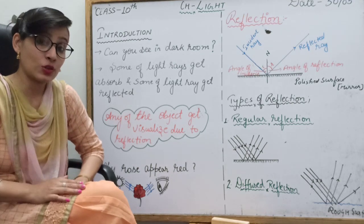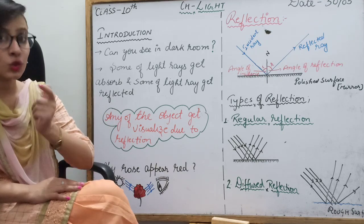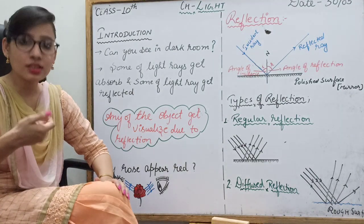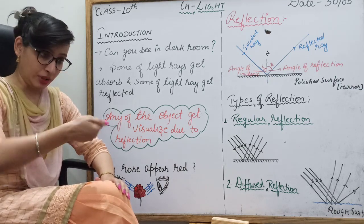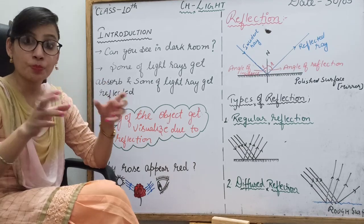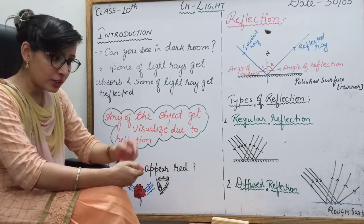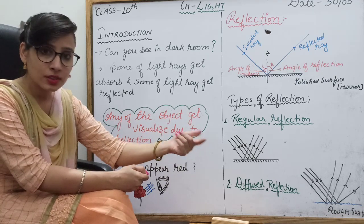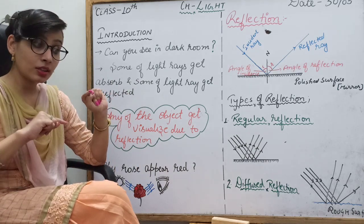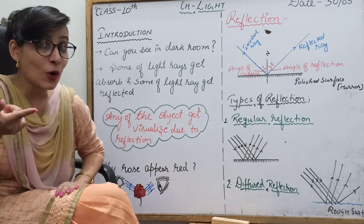Now consider one more situation in that dark room. You cannot see anything. And suddenly you remember that you have a torch. You take the torch and light it up — switch it on. As soon as you turn on the torch, there will be some light in part of that room. For example, a chair in your classroom becomes visible. For visualizing any object, you need light.